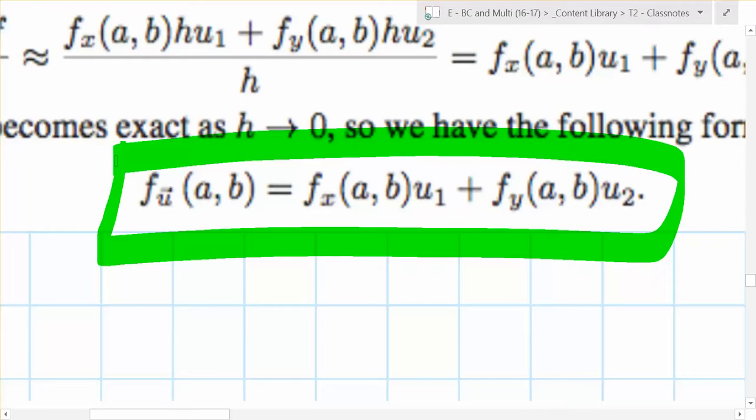The rate of change in the u direction at a, b is going to be f_x(a,b) times u_1 plus f_y(a,b) times u_2, where u is a unit vector. It has to be a unit vector.